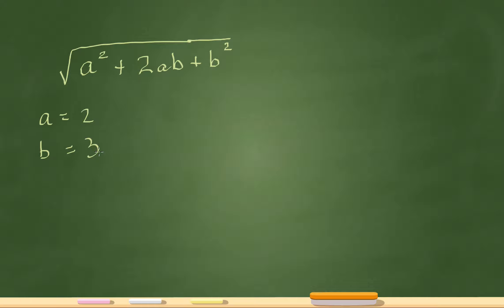I can make anything I want. I'm making them 2 or 3, first thing that came to my mind. So that becomes 4. 2 squared will be 4 plus 2 times 2 is 4, 4 times 3 is 12, plus b squared which will be 3 squared which will be 9, and all of this is under the square root sign. So 4 plus 12 is 16, 16 plus 9 is 25. So my final answer is square root of 25.